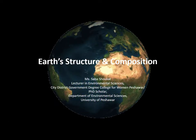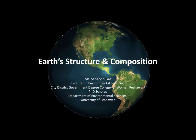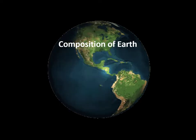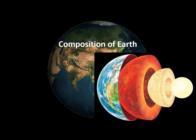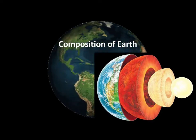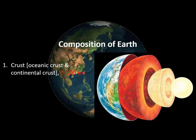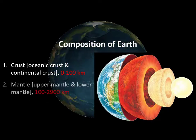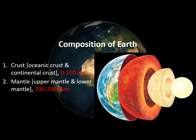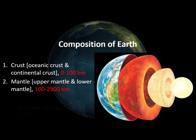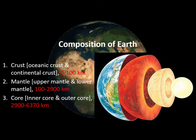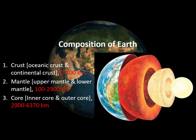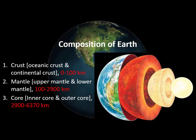Hello friends. In today's lecture I'm going to speak about the structure and composition of Earth. On the basis of composition, we can divide Earth into three different layers: the first one is crust, which extends from zero to 100 kilometers; the second one is mantle, from 100 to 2900 kilometers; and the third one is core, which extends from 2900 to 6370 kilometers.